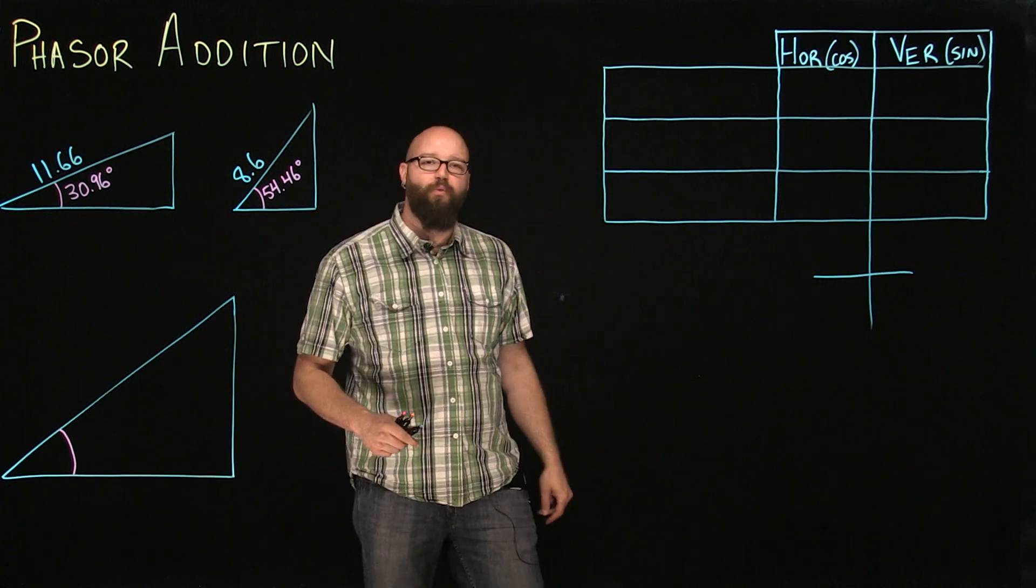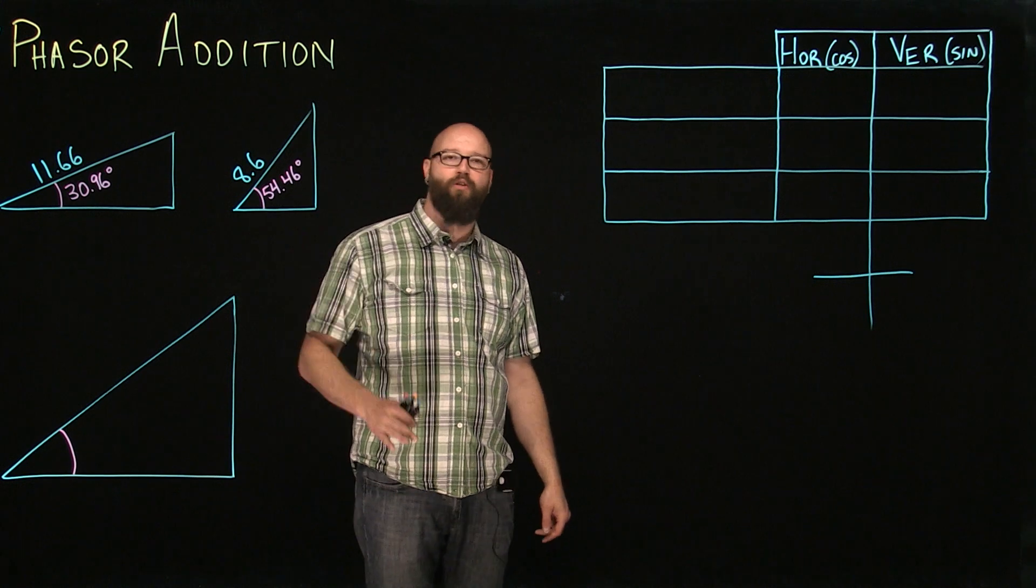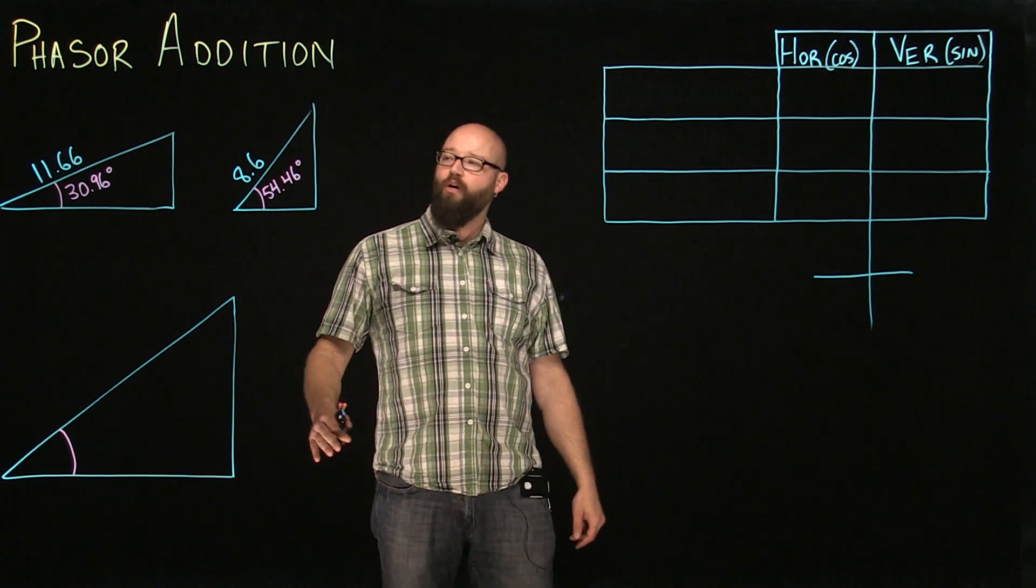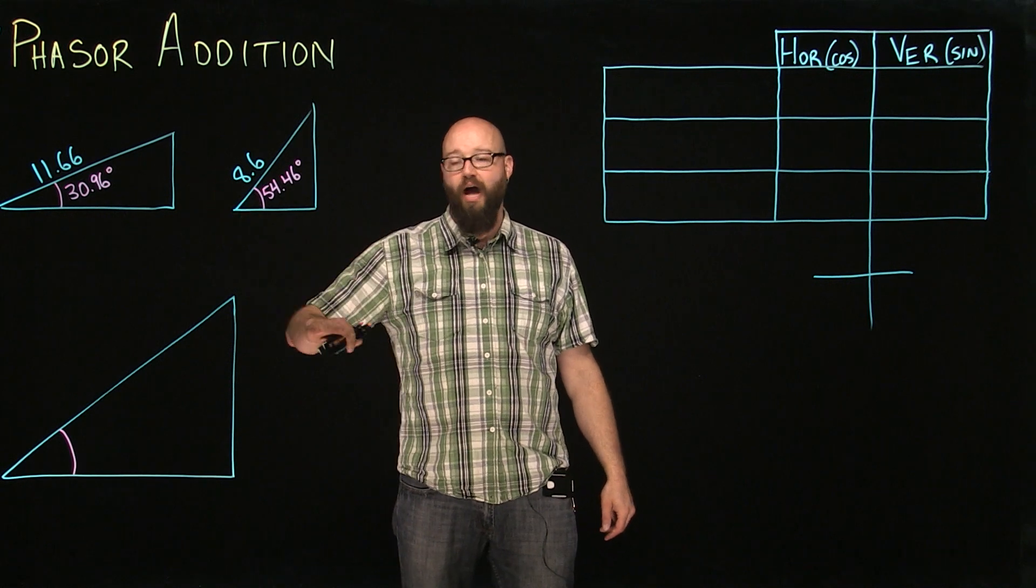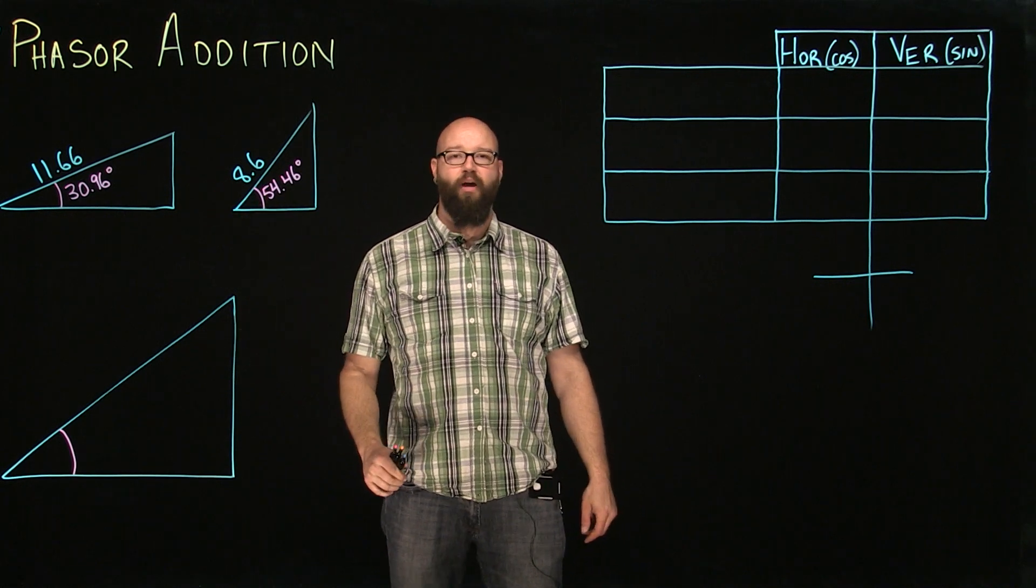Previously in other videos, we talked about how we add triangles together when we're given the horizontal and vertical components. What we're talking about today is if we're given the hypotenuse of a triangle and the angle, how can we take these and make a resultant triangle from those?